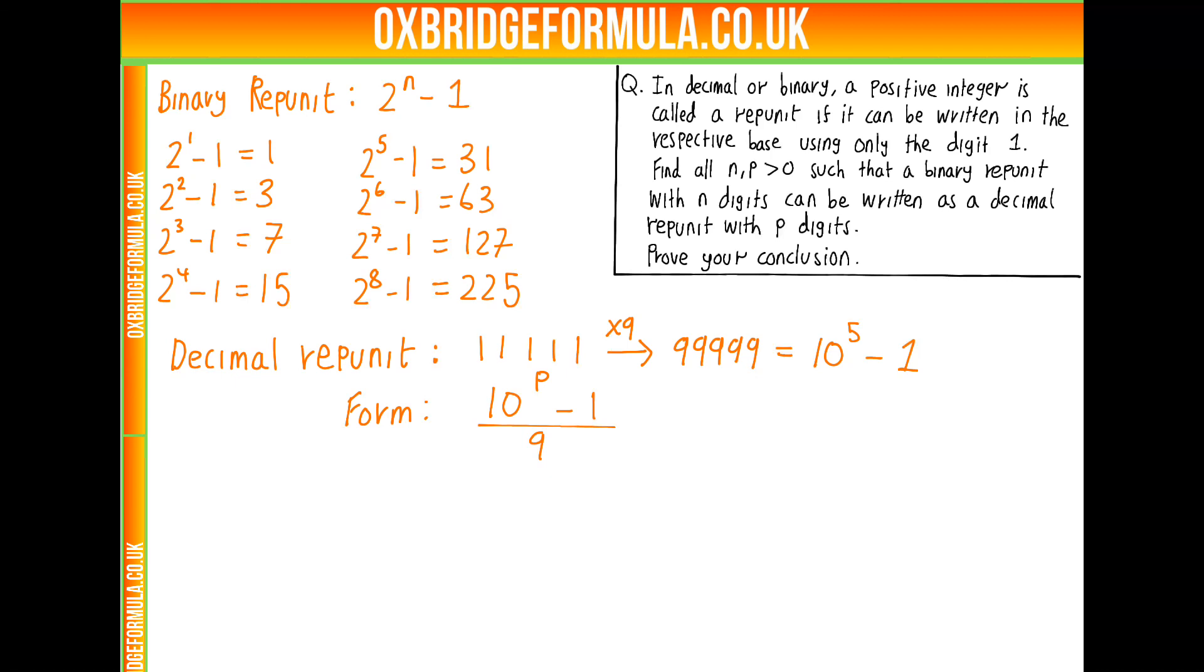So now, what do we need? We need 2 to the n minus 1 to equal 10 to the p minus 1 over 9 for some n and p. We're looking for pairs of n and p that do this. So times that equation by 9, we have 9 lots of 2 to the n minus 1 equals 10 to the p minus 1. Let's simplify that out. We'll have 9 times 2 to the n minus 8 equals 10 to the p.